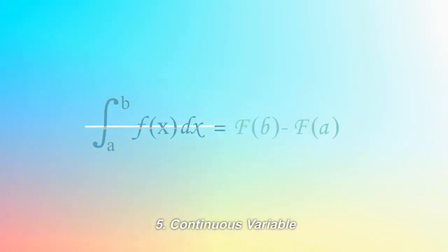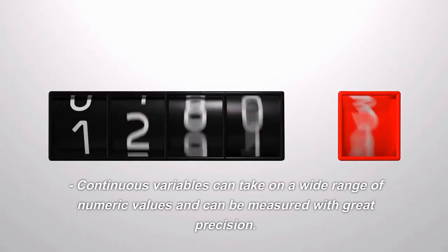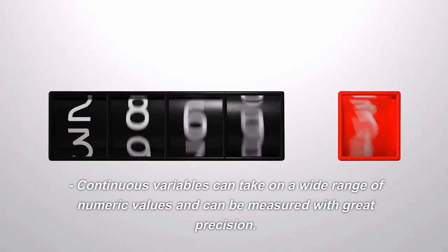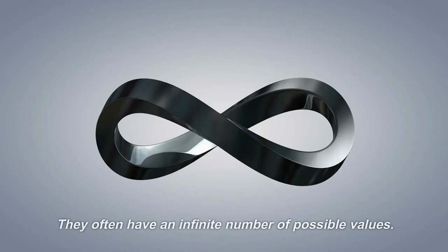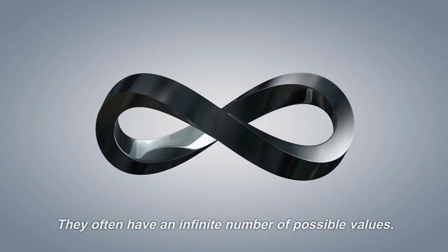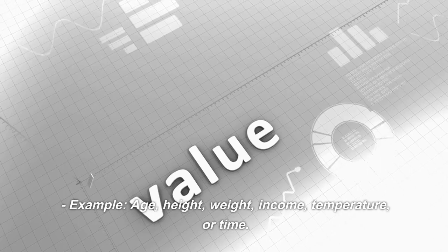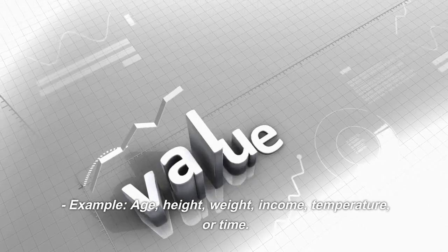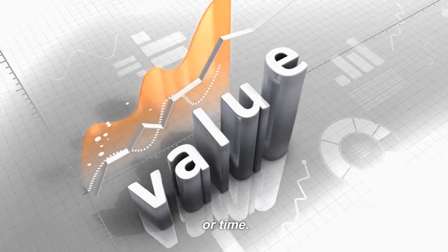Continuous variable. Continuous variables can take on a wide range of numeric values and can be measured with great precision. They often have an infinite number of possible values. Example: Age, height, weight, income, temperature, or time.